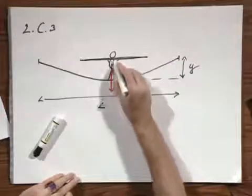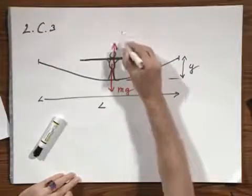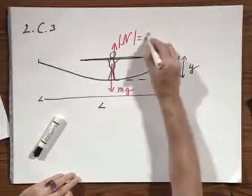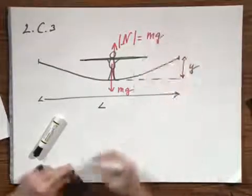So therefore, the rope must push back with a force, which I will call N, upwards. And the magnitude of N must be mg.